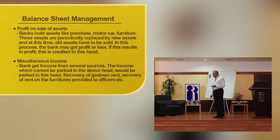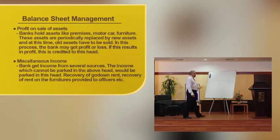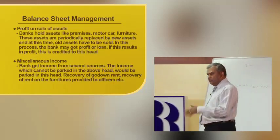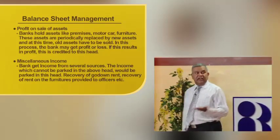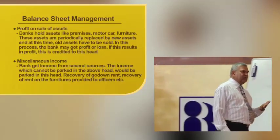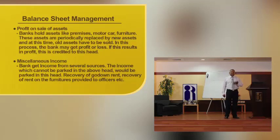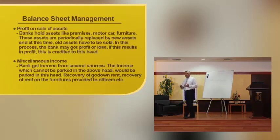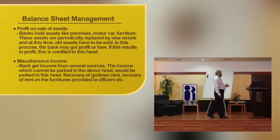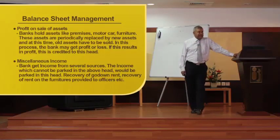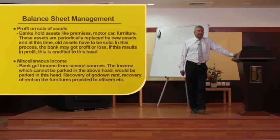Then comes profit on sale of assets. Banks maintain a lot of fixed assets — premises, furniture, cars, and all that. Periodically these assets have to be replaced, particularly movable assets like cars. When sold, if it results in a profit, it will be credited to 'profit on sale of assets.' Any income which cannot be grouped under the above income heads will be credited to miscellaneous income. Banks get income from several sources — recovery of loan write-offs, recovery of rent, furniture provided to offices, etc. These will be credited to this head.